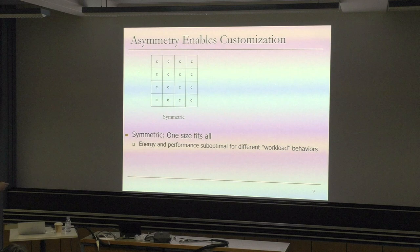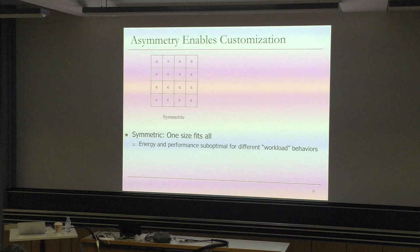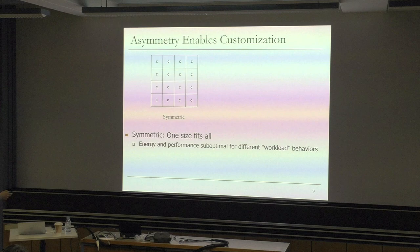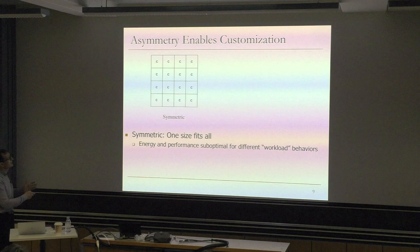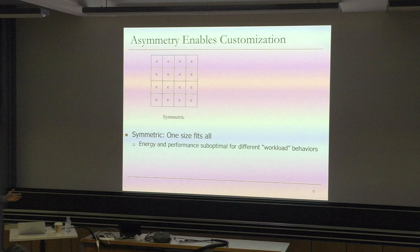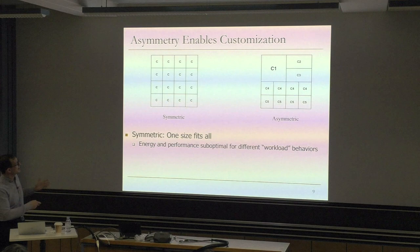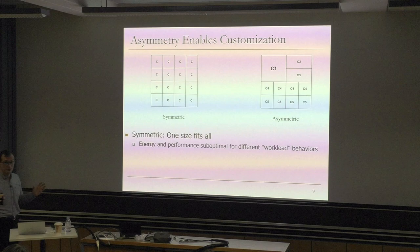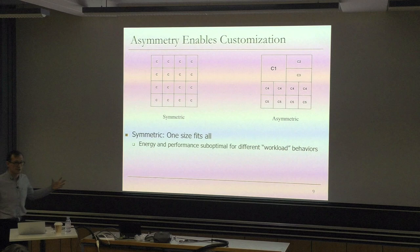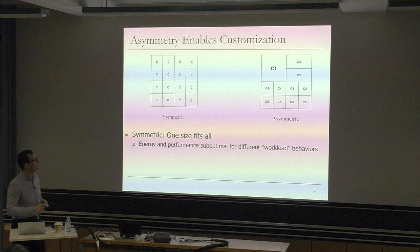Because you have a workload that requires less resource than a given partition - too bad, you allocate only that resource and waste energy. You have a workload that requires a bigger resource but you don't have it - you don't get the performance you want. But if you have some asymmetry in the system - formed statically with different-sized resources, or dynamically by merging resources - now you enable customization and adaptation. You can form simple cores and merge them to become bigger cores. That's a very good area to think about also.